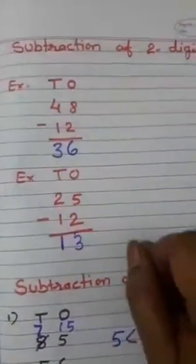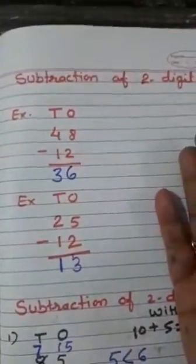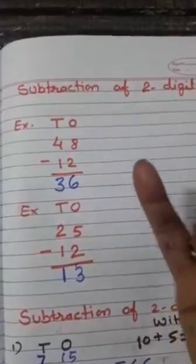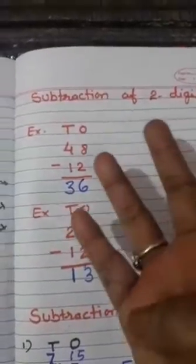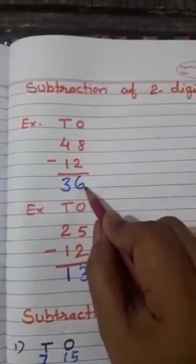Take out 8 fingers: 1, 2, 3, 4, 5, 6, 7, 8. Minus 2: 1, 2. Now count remaining fingers: 1, 2, 3, 4, 5, 6. So what is our answer? 6.